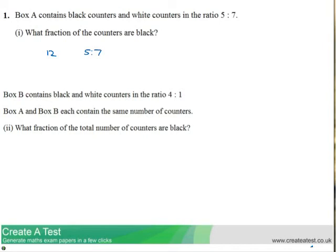We could also have 24 counters. An equivalent ratio to 5 to 7 would be 10 to 14. All I've done there is double both of these numbers, so it's an equivalent ratio times by 2.